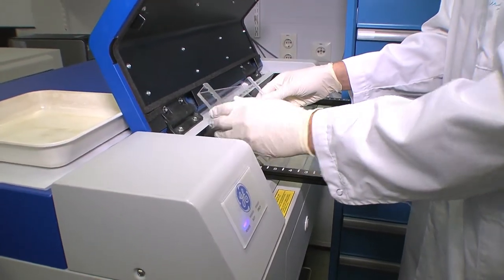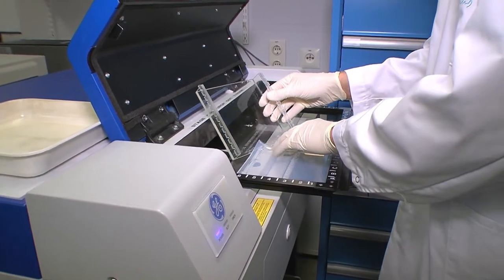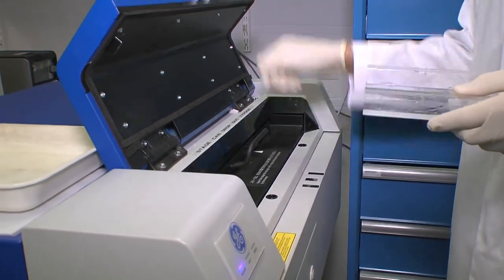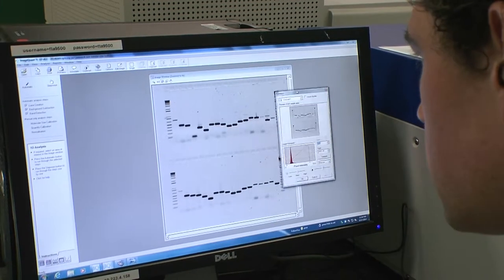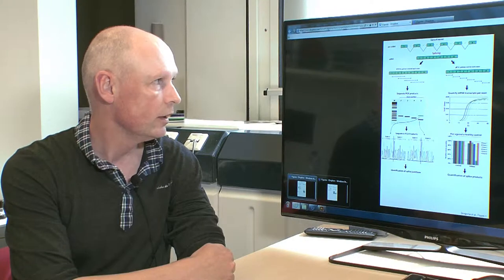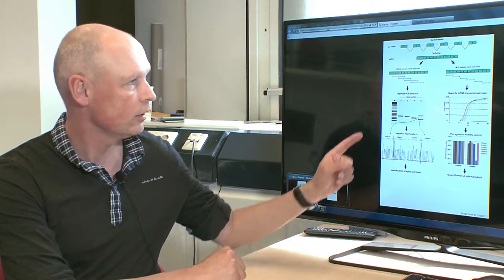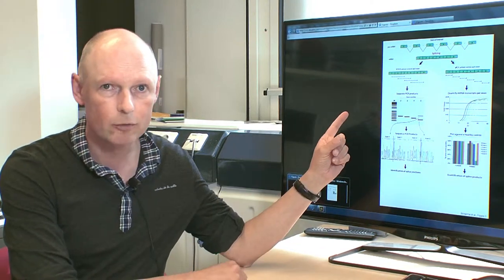Here we show that such an assay is feasible, is able to detect aberrant splicing events, and that it is time and cost effective. The method is implemented as follows. The assay consists of two parts. In the first part, we look at qualitative differences in splicing, which can be detected by flanking exon PCR.